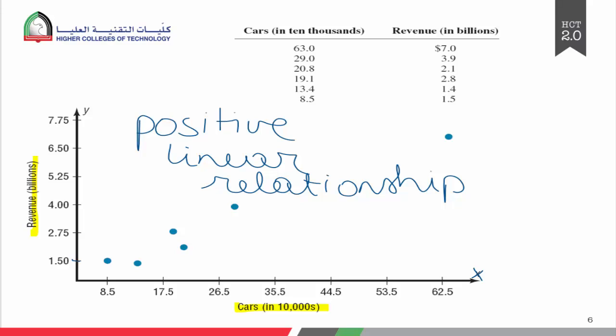Positive because as x goes up, y goes up. Linear because the points are very close to a line. By the way, in our chapter, we are focusing on linear relationships only.